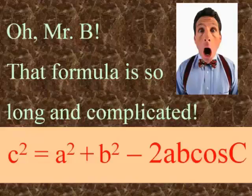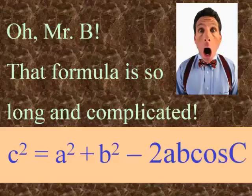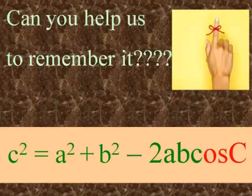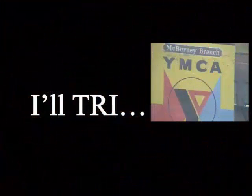Oh, Mr. B, that formula is so long and complicated: c squared equals a squared plus b squared minus 2ab cosine C. Can you help us remember it? Well, I'll try.